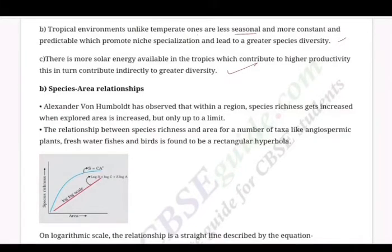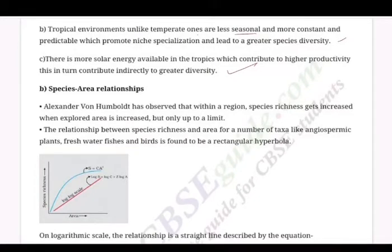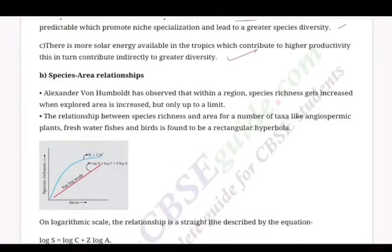The largely tropical Amazon rainforests in South America have the greatest biodiversity on Earth. They are home to more than 40,000 species of plants, 3,000 species of fishes, 1,300 varieties of birds, 427 species of mammals, 427 species of amphibians, 378 species of reptiles, and more than 1,25,000 invertebrates. Scientists estimate that in these rainforests there might be at least 2 million insect species waiting to be discovered and named.